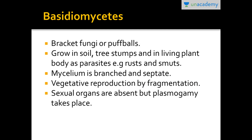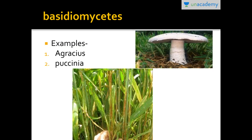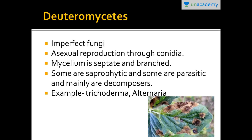Basidiomycetes is the mushroom family, also known as bracket fungi and puffballs. They grow in soil, on trees, and on stumps. Their mycelium is branched and septate. They reproduce by vegetative reproduction through fragmentation, and in sexual reproduction, sexual organs are absent but plasmogamy takes place. Agaricus is the common mushroom, and Puccinia is a basidiomycetes fungus that causes disease in plants.